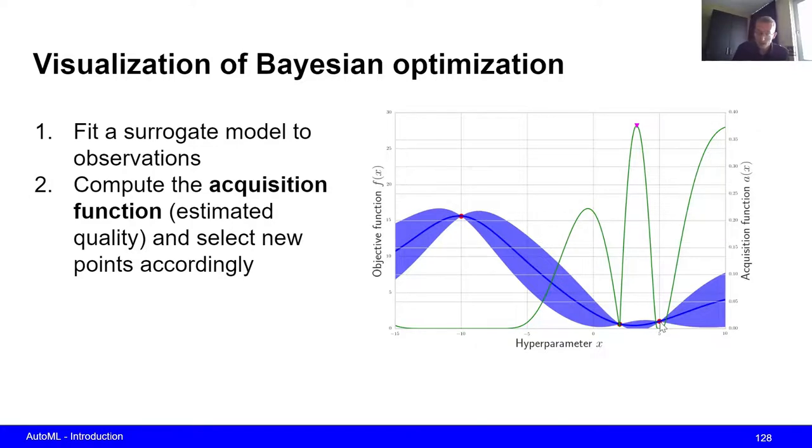And therefore, this gets a pretty high acquisition function score. So this has a high expected quality. And what we also kind of see is that as the uncertainty increases, the acquisition function also tends to increase a bit. And this is especially visible also here.